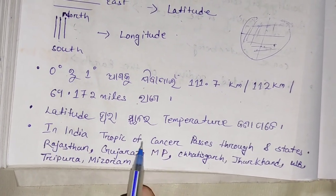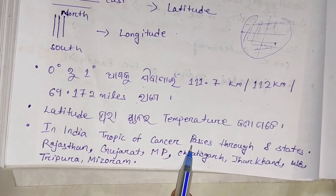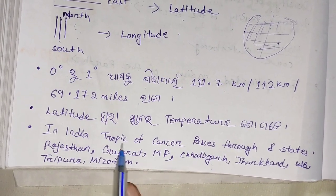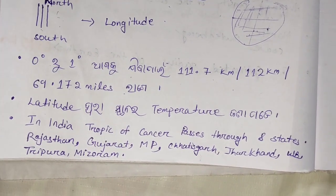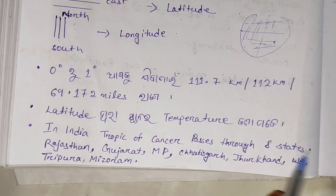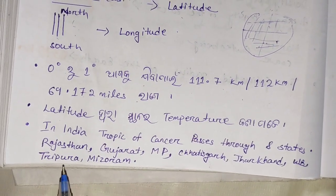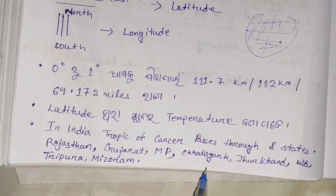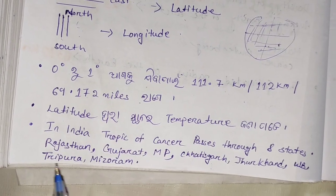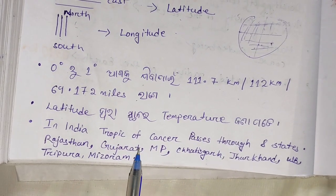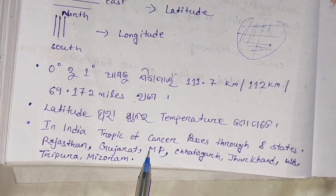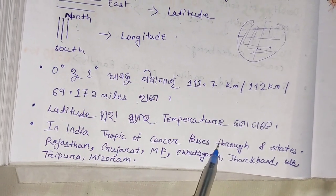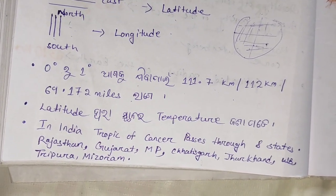I was able to refer to the Tropic of Cancer as well. Our state is in part of this area. The states known to lie along the Tropic of Cancer are: Rajasthan, Gujarat, Madhya Pradesh, Chhattisgarh, Jharkhand, West Bengal, Tripura, and Mizoram. These states are located in this area and they fall along the Tropic of Cancer.